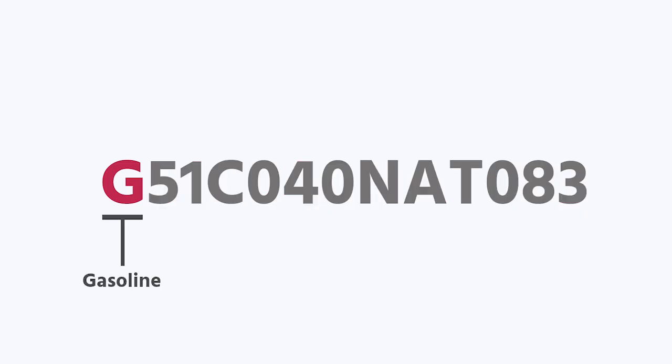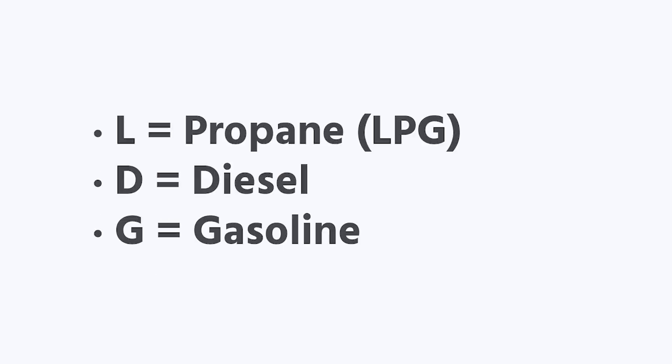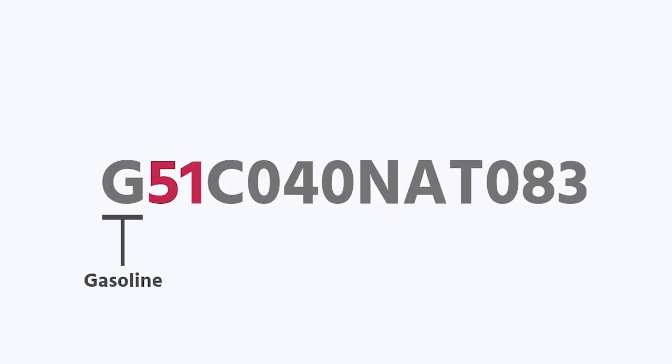In that example model number, the G is going to tell me it's a gasoline engine. If you had propane, it'd be an L; diesel, it'd be a D at the beginning. The 5-1 is your model type.